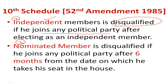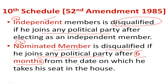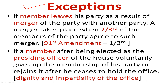The third case is nominated members. As you know, after Jammu and Kashmir and Ladakh became union territories, the President no longer nominates Anglo-Indians to the Lok Sabha, but in Rajya Sabha, 12 members are still nominated. Those nominated members will be disqualified if they join a political party 6 months after their seats are allocated. The exception is if any member's party leaves as a result of a merger — meaning two political parties have merged.